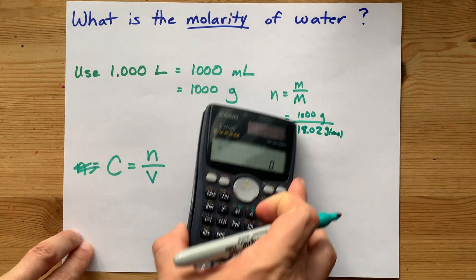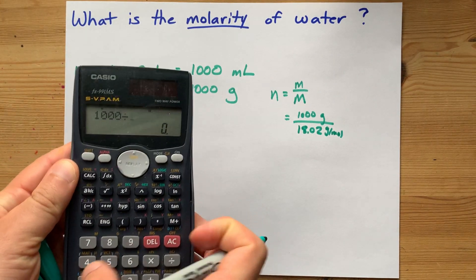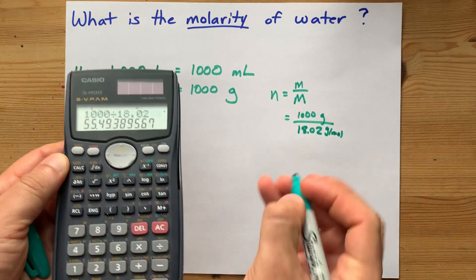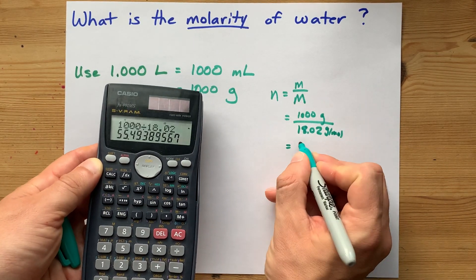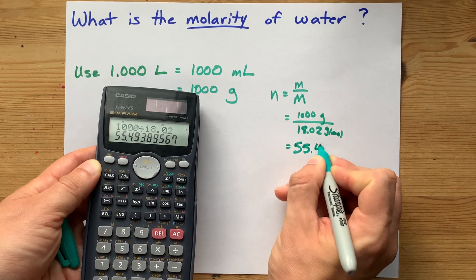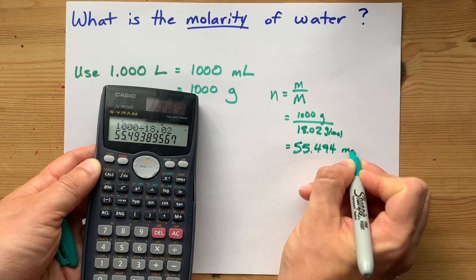When you do this calculation, 1,000 divided by 18.02, I get that that 1,000 grams of water is the same as 55.494 moles of water.